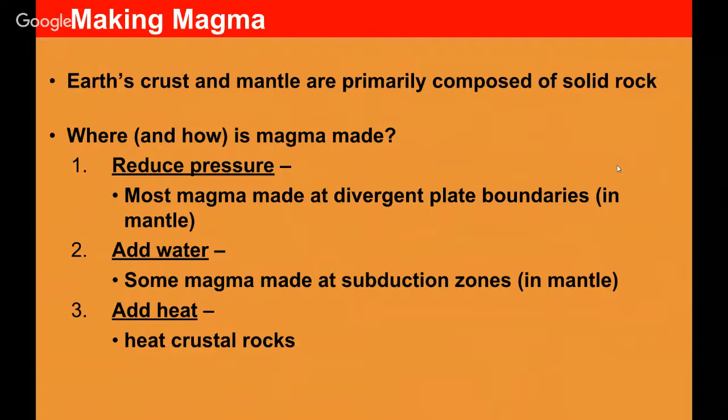The second way you can generate magma is by adding water. A lot of this is caused at subduction zones where your oceanic plate that's getting subducted down into our planet is bringing ocean water with it, and that ocean water mingles with the hot mantle.